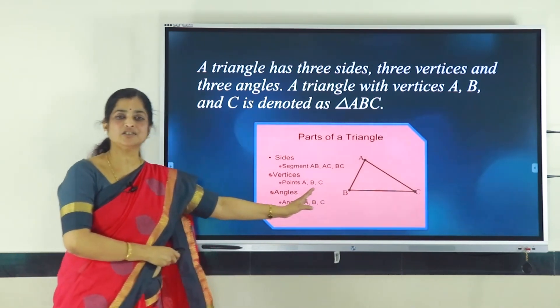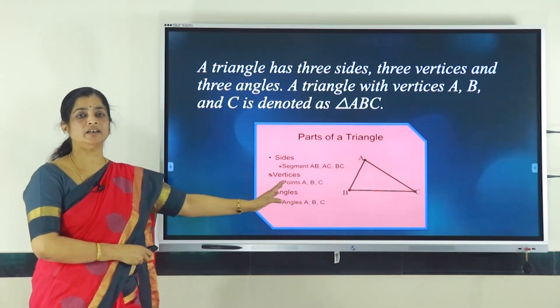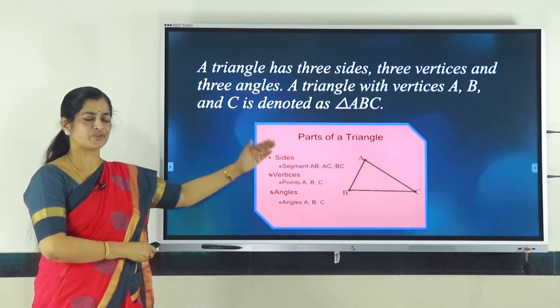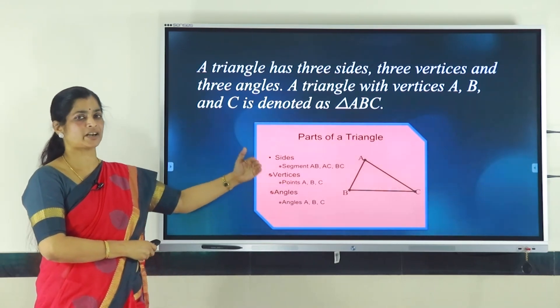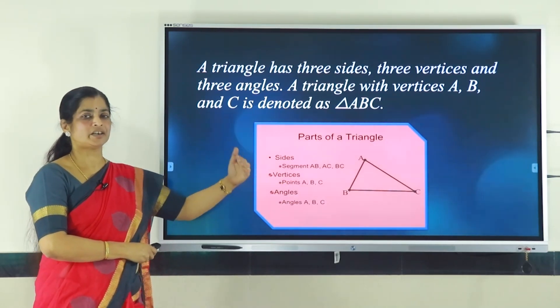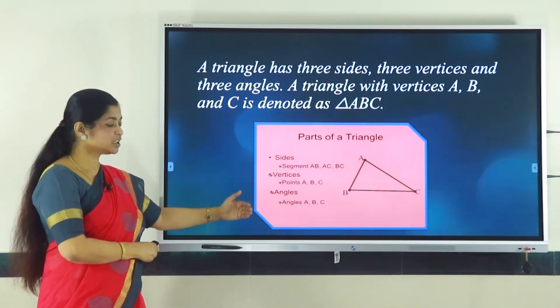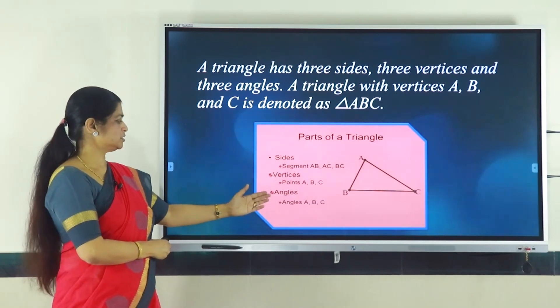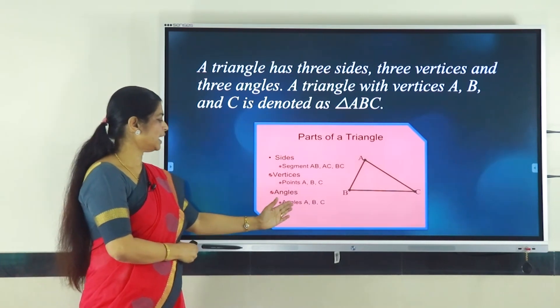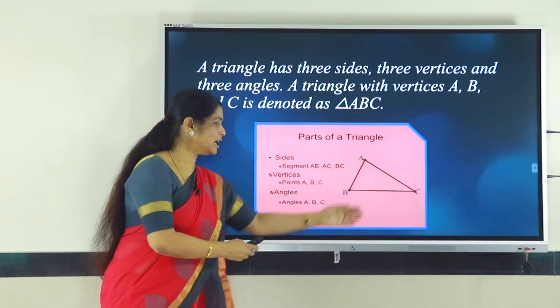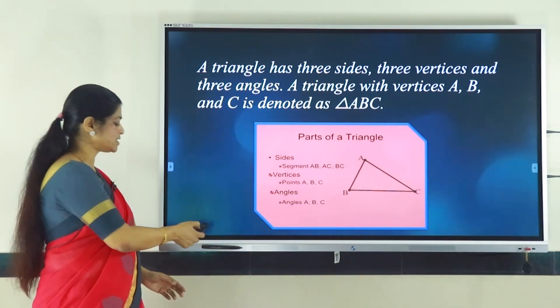How many angles do you find here? We find three angles. From the word triangle, 'tri' means three. There are three angles: angle A, angle B and angle C.